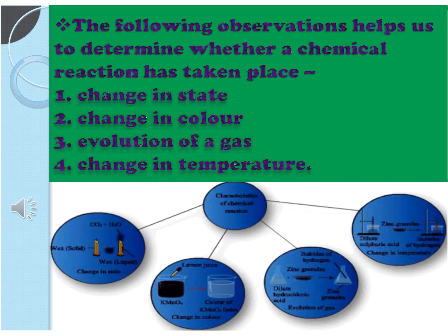Now moving towards the next topic: characteristics of a chemical reaction. The following observations help us to determine whether a chemical reaction has taken place or not. First is change in state. During a chemical reaction there is a change in physical state of substances. For example, when hydrogen gas reacts with oxygen gas it will form water which is in liquid state.